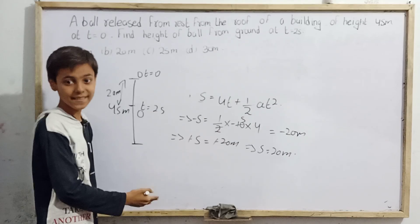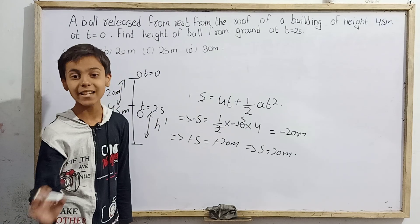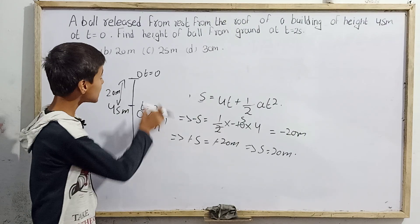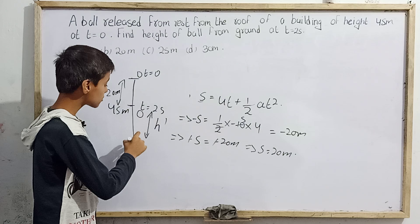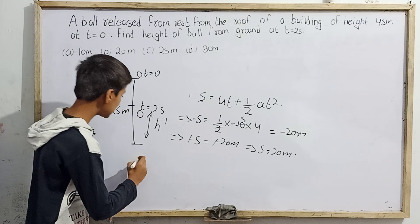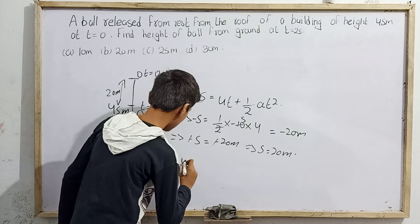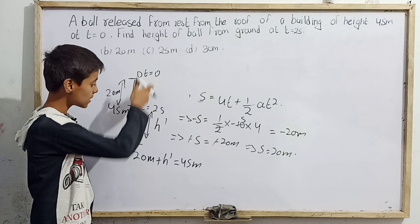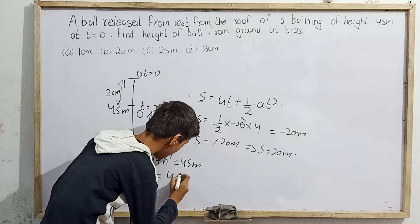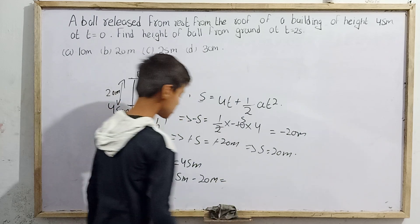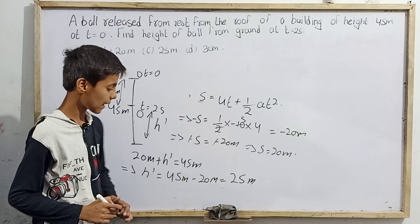The ball has fallen 20 meters from the roof, and the total building height is 45 meters. We need to find h dash, the height of the ball from the ground at t equals two seconds. We can write: 20 meters plus h dash equals 45 meters. Therefore, h dash equals 45 minus 20, which equals 25 meters.